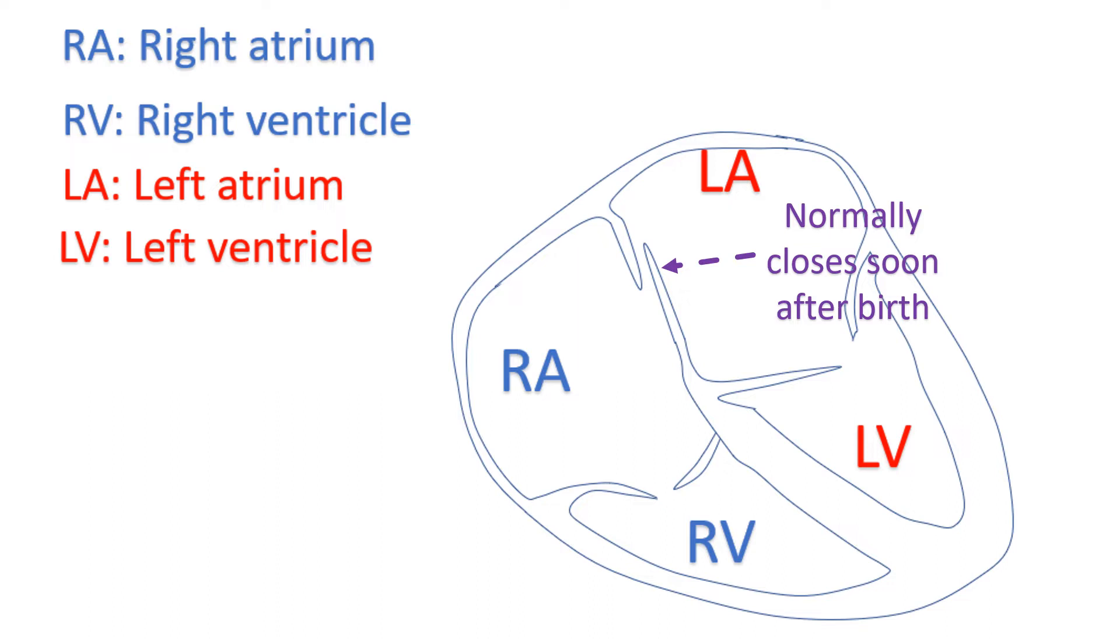Even if there is a residual opening, most of the time there is no shunting of blood across the PFO because left atrial pressure is higher than that in the right atrium.